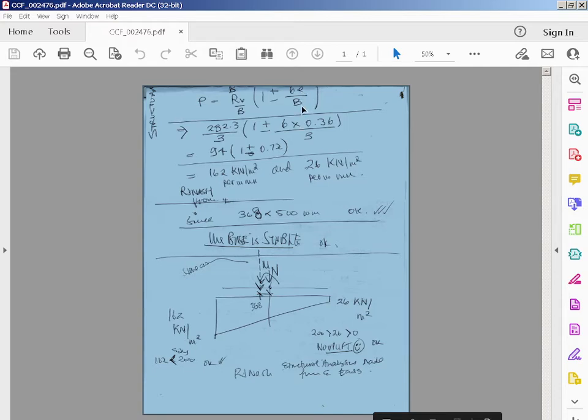Divided by one plus or minus six E over B. Because area for this is going to be per meter run of retaining wall, so instead of having area equals B times L, you can just use B. And M equals six M equals E times RV.